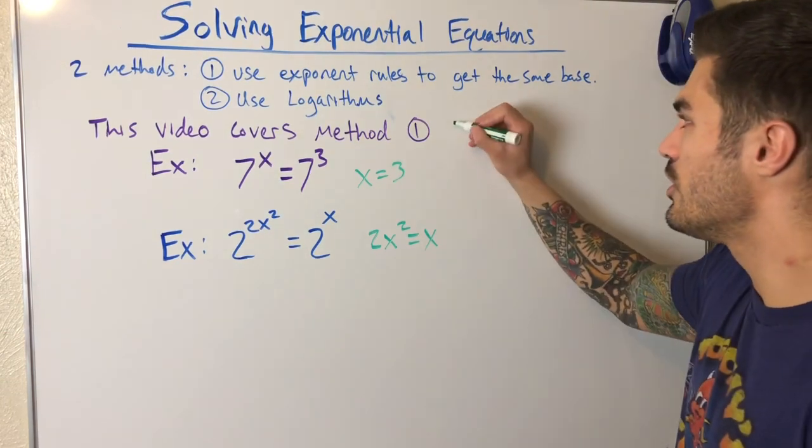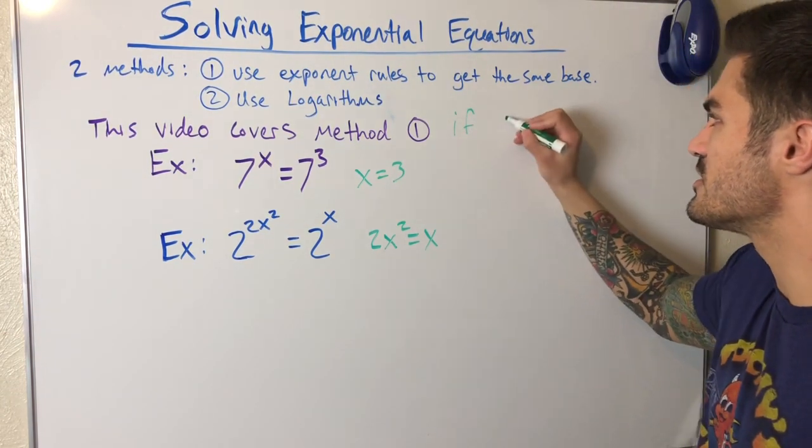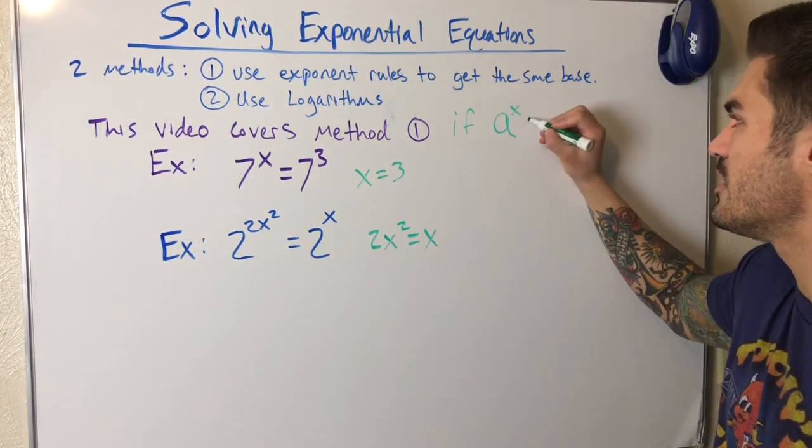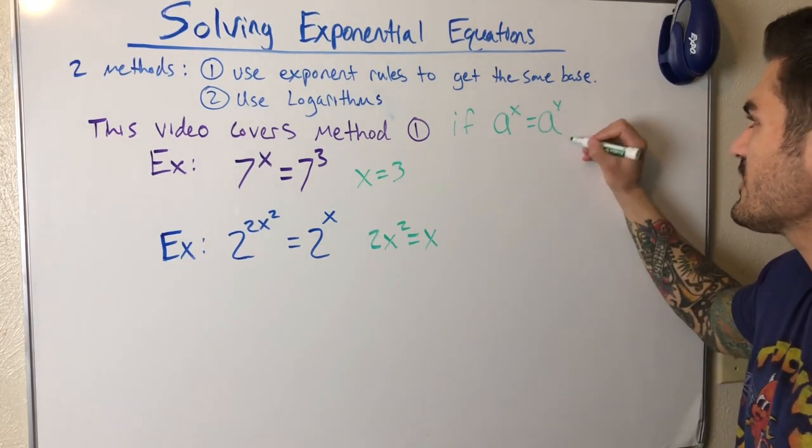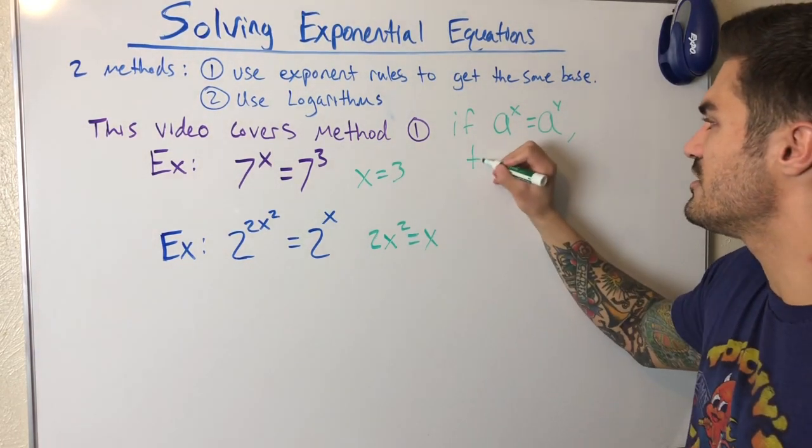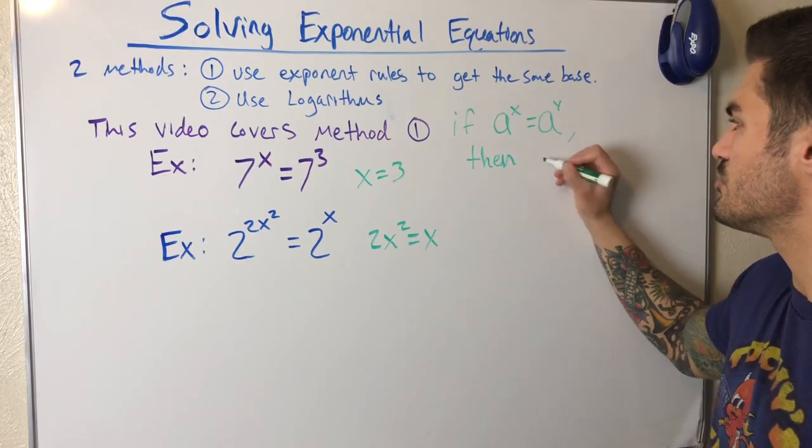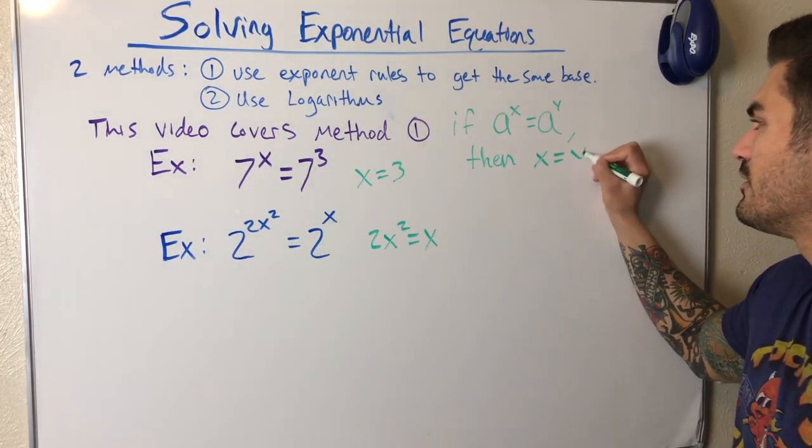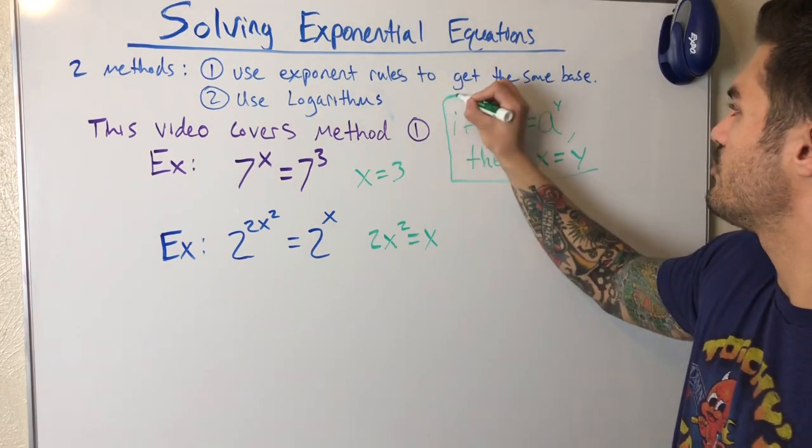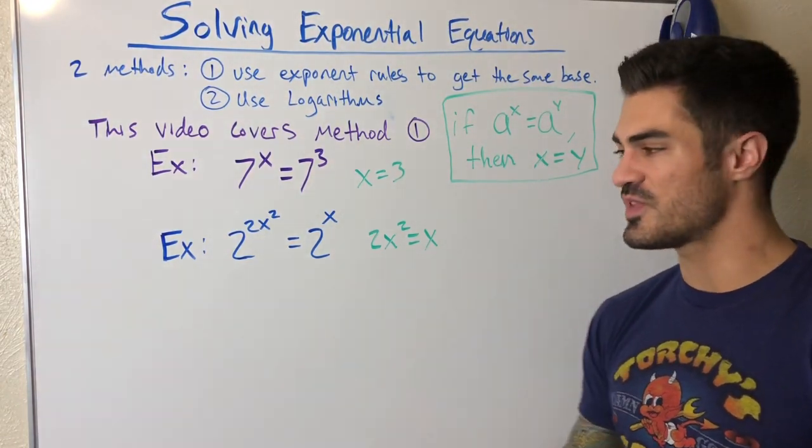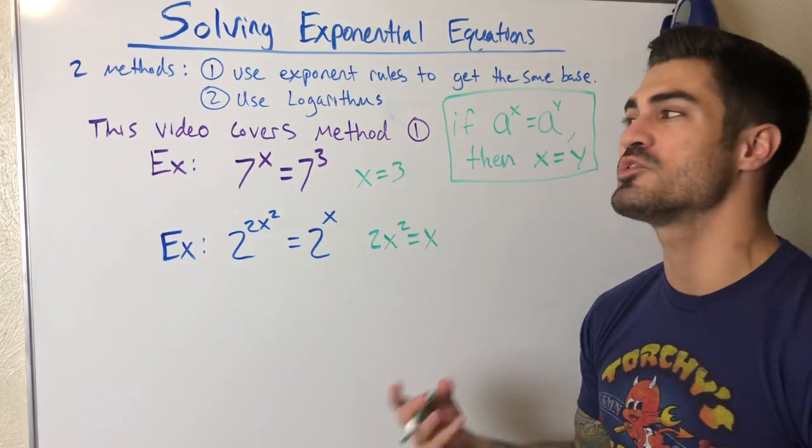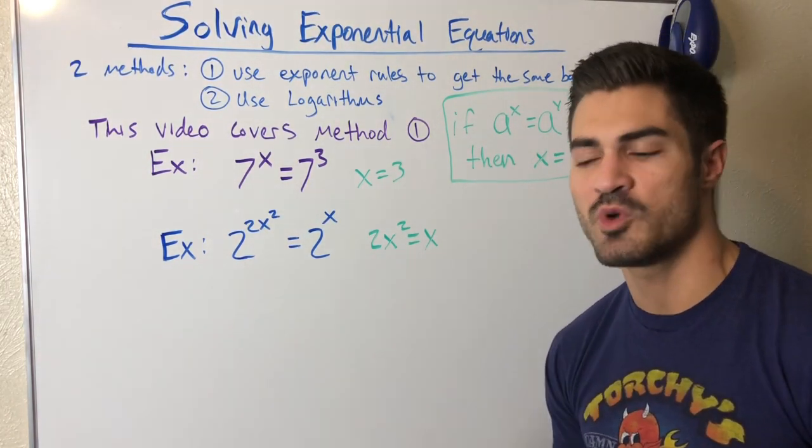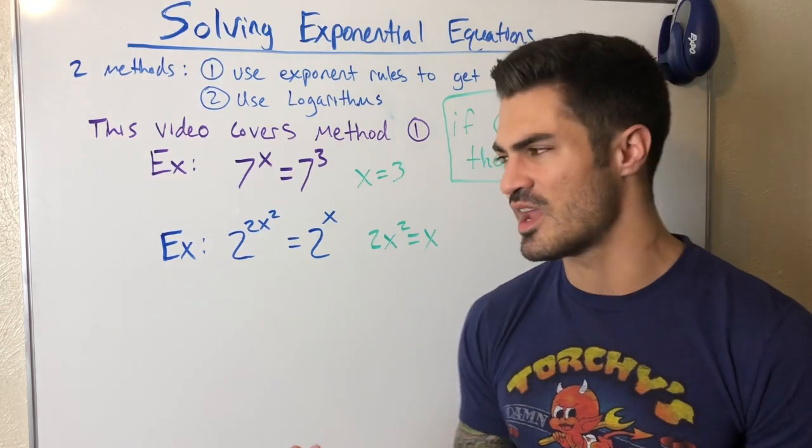So can we write a general rule? Well, if we have something like this, some base to some power equals that same base to some power. If this is true, then x must equal y. And this is the general rule we use to solve these exponential equations without using logarithms. So the tricky part is the bases have to be the same.